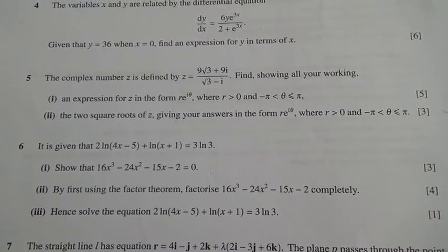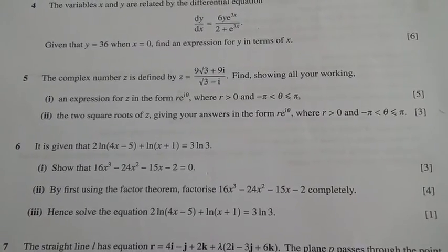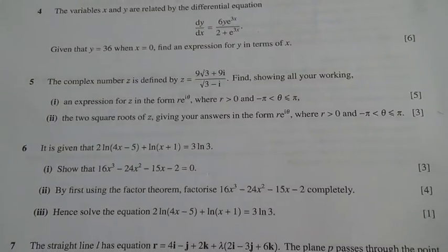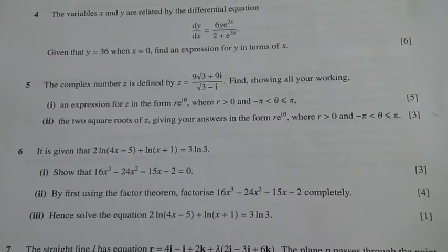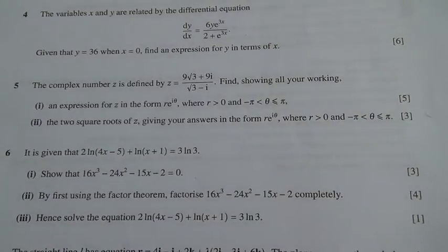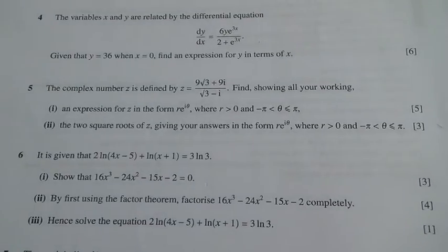Hi, question number 5 taken from June 2014 Advanced Level Maths HSC P3. The complex number z is defined by z equals 9√3 plus 9i over √3 minus i. Find, showing all your working...